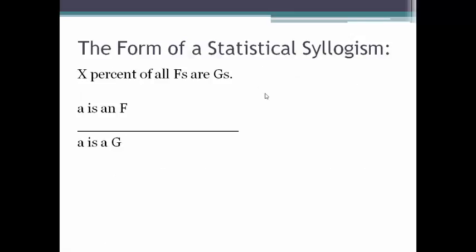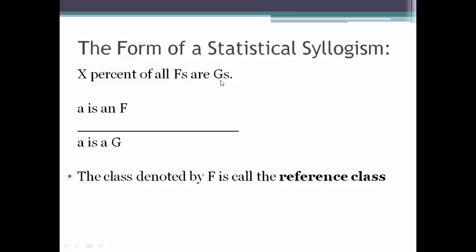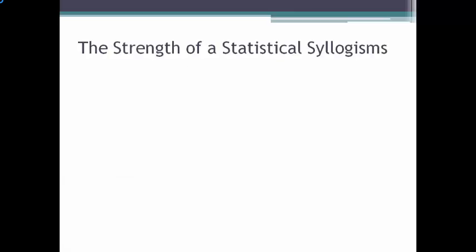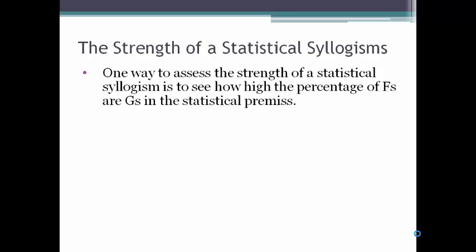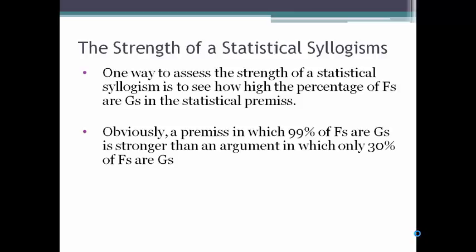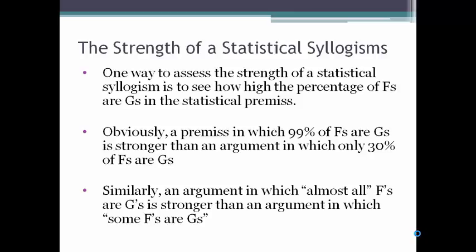The form of a statistical syllogism is this, where A stands for a particular individual and F and G stand for classes: X percent of all F's are G's. A is an F. Therefore, A is a G. In the first case, Elena was our A, being a freshman at State University was F, and being a resident of the state was G. The class denoted by F is called the reference class, and the class denoted by G is called the attribute class. One way to assess the strength of a statistical syllogism is to see how high the percentage of F's are G's in the statistical premise. A premise in which 99% of F's are G's is stronger than one in which only 30% of F's are G's. Similarly, an argument in which almost all F's are G's is stronger than one in which just some F's are G's.